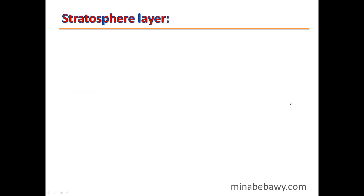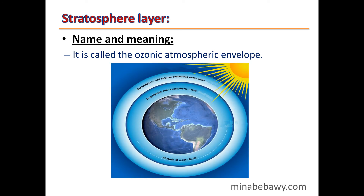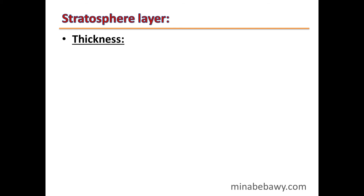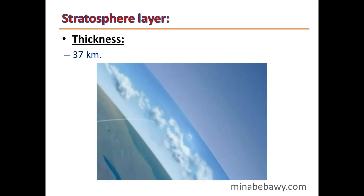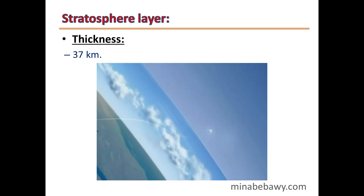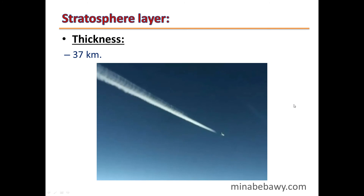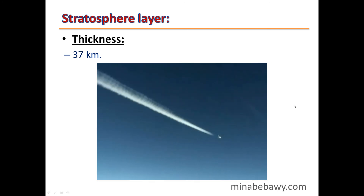The second layer is the Stratosphere, also called the Ozonic Atmospheric Envelope because it contains the ozone layer. Its thickness is 37 km.